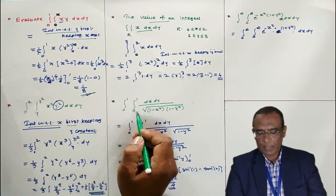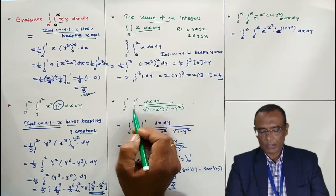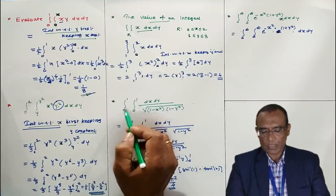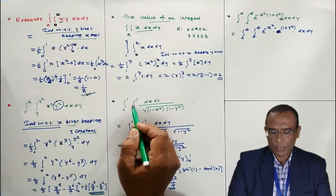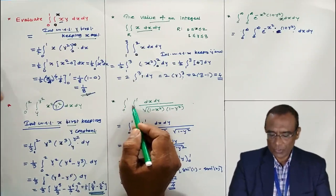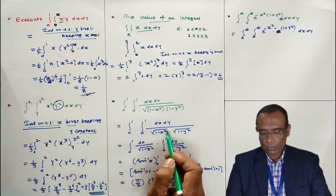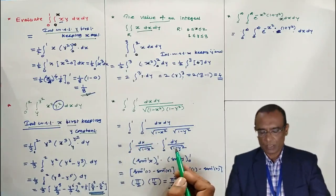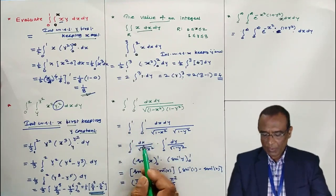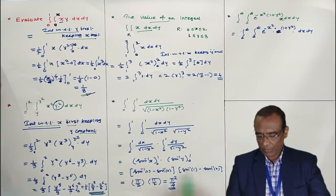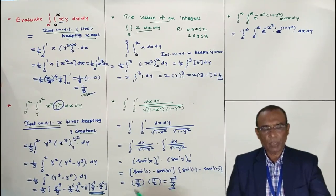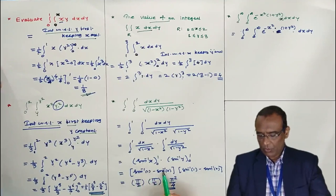Next problem: evaluate the double integral of this function where all limits are constants and the x and y limits have the same values. Since the order of integration is not important here, you may integrate with respect to x or y first. The integral of 1/√(1 − x²) is sin⁻¹(x), and similarly for y. Applying limits: sin⁻¹(1) − sin⁻¹(0) = π/2 − 0 = π/2 for each. Therefore the result is π/2 × π/2 = π²/4.